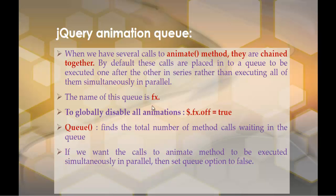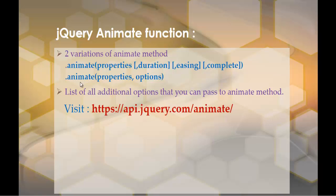The queue method returns the total number of method calls waiting in the queue. Now, if you want to execute all animate methods parallely instead of one after another, you need to set the queue option to false. To do that you need to use the other variation of the animate method.